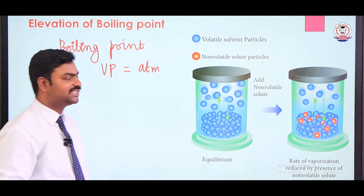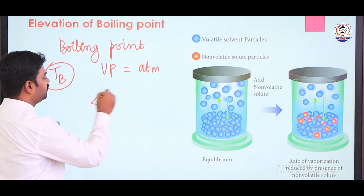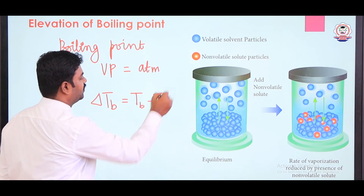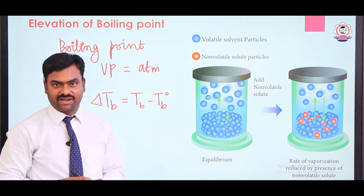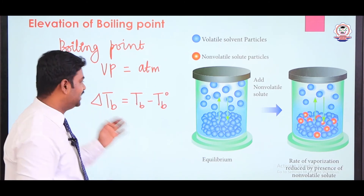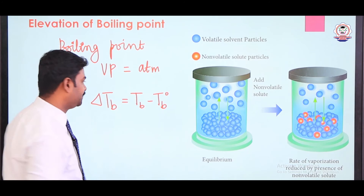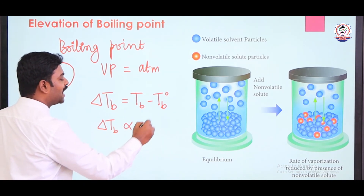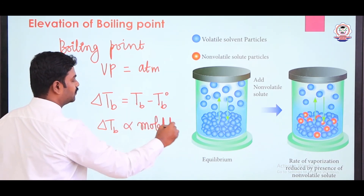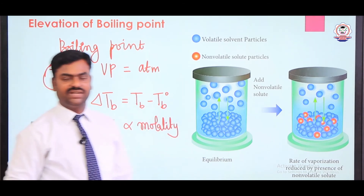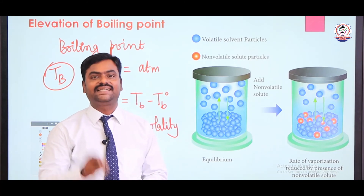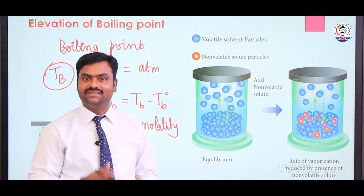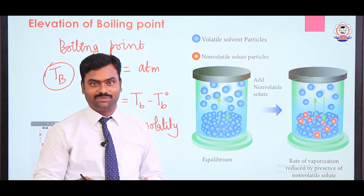The elevation of boiling point is expressed as ΔT_B, which equals T_B minus T_B⁰, where T_B is the boiling point of the solution and T_B⁰ is the boiling point of the pure solvent. ΔT_B is directly proportional to molality. We use molality rather than molarity because molarity is temperature dependent — if temperature increases, molarity decreases, which would affect our equation. That is the advantage of using molality.